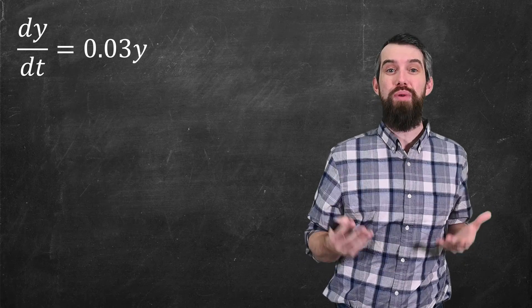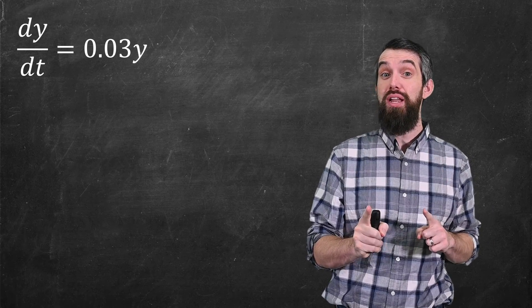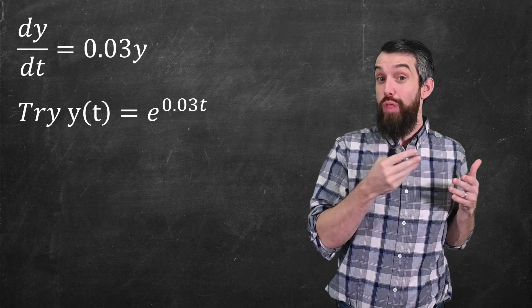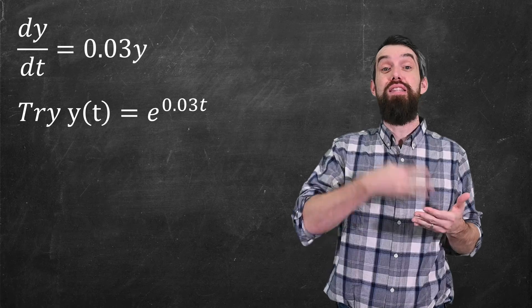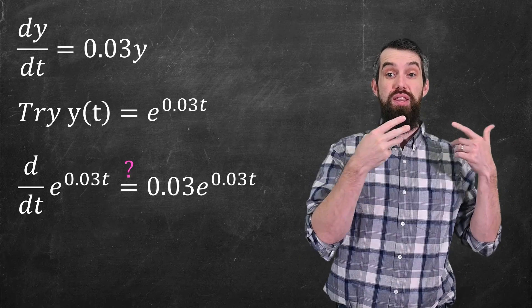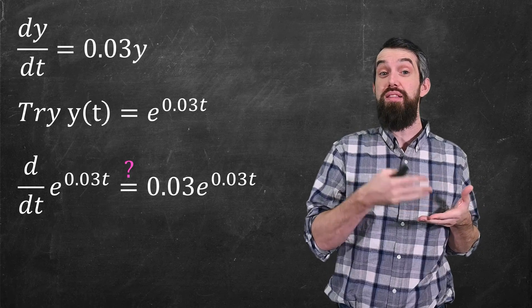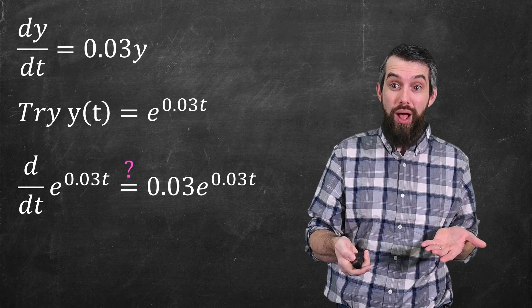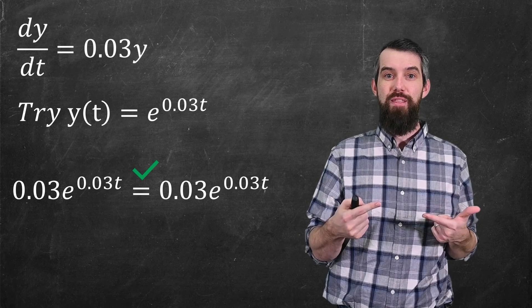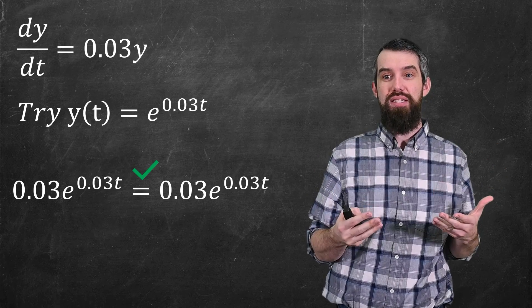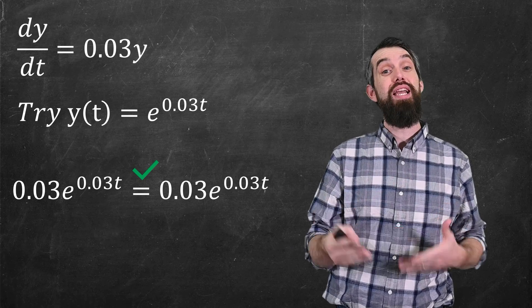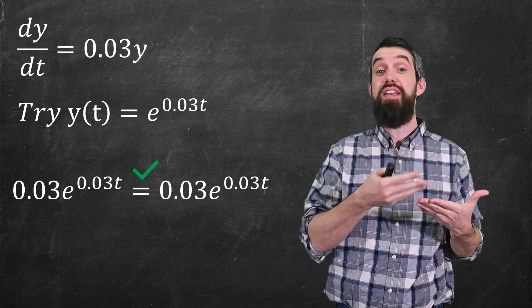So what can we do with this? This equation actually has a solution. If you accept that y of t is e to the 0.03t, it just works — plug it into both sides. The derivative of e to the 0.03t is 0.03 times e to the 0.03t, which is the same thing on both sides. So this function, e to the 0.03t, is a solution to that differential equation.